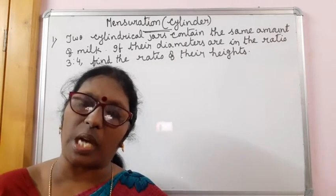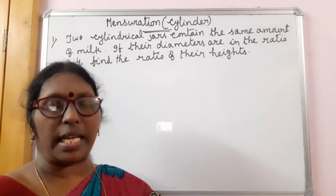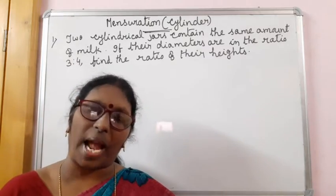That means volume of two jars is same, but they are of different radii and heights are different.